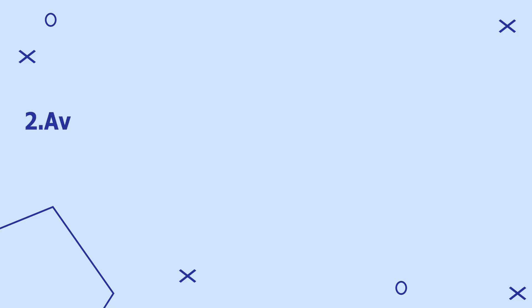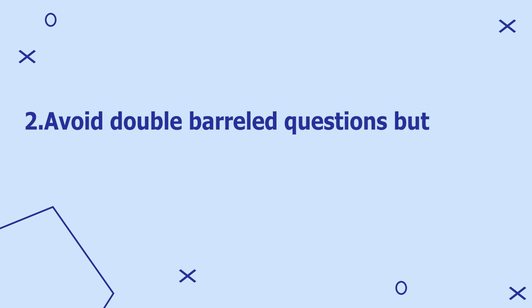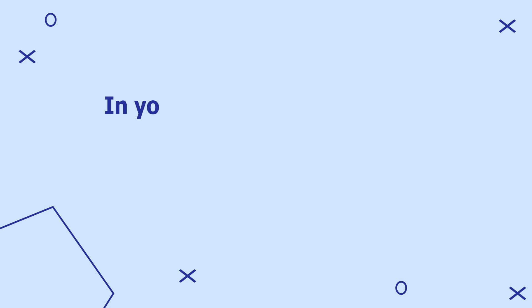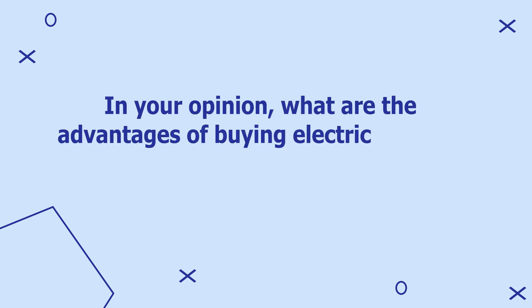Tip number two: avoid double-barreled questions, but rather inquire about one thing at a time. For instance, rather than asking "in your opinion, what are the advantages of buying electric vehicles and solar panels," a better tactic is to divide this question into two questions — one about electric vehicles and the other about solar panels.